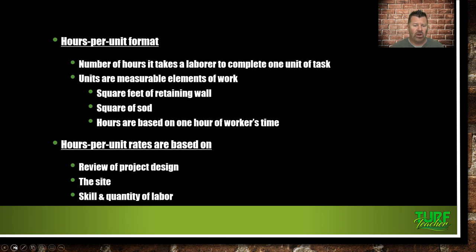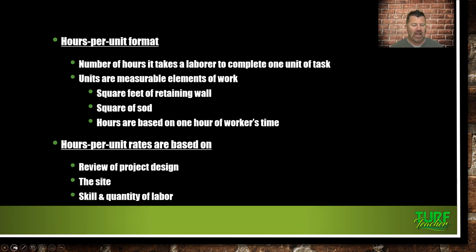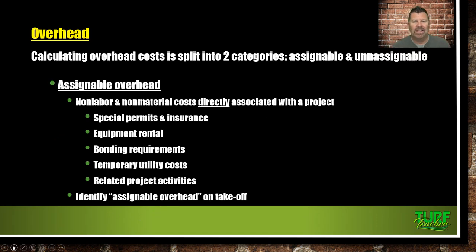Hours per unit is the number of hours it takes labor to complete a task. Units are measurable elements of work — square feet of retaining wall, a square of sod. Hours per unit depend on review of the project design, the site, and the skill and quality of labor. Quality of labor is hard to maintain right now. Overhead is split into two categories: assignable — non-labor, non-material cost directly associated with a project such as special permits, insurance, equipment rental, bonding, and temporary utilities — and unassignable overhead.